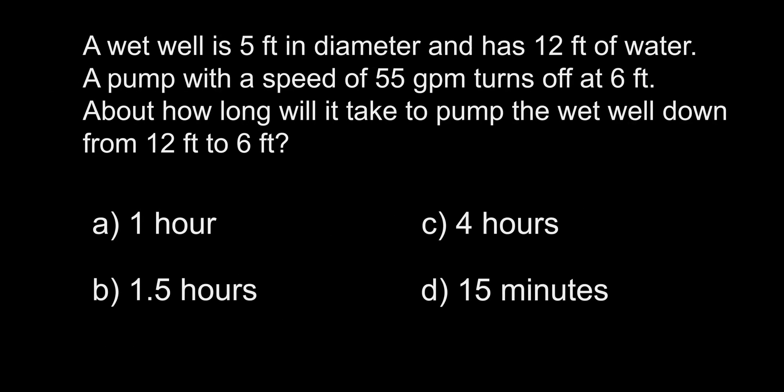A wet well is 5 feet in diameter and has 12 feet of water. A pump with a speed of 55 gallons per minute turns off at 6 feet. About how long will it take to pump the wet well down from 12 feet to 6 feet? A. 1 hour. B. 1.5 hours. C. 4 hours. D. 15 minutes. The answer is D, 15 minutes.